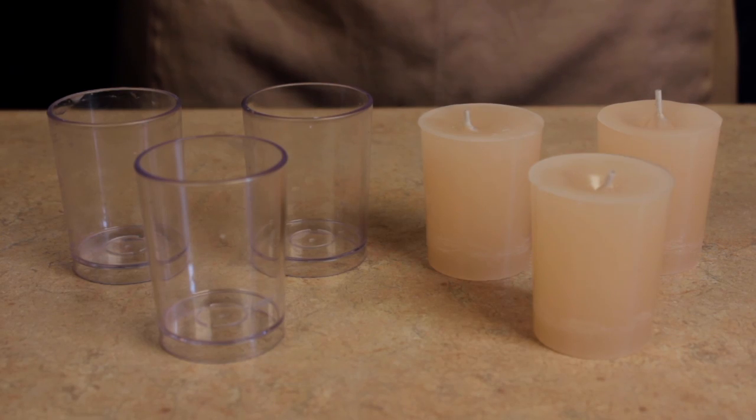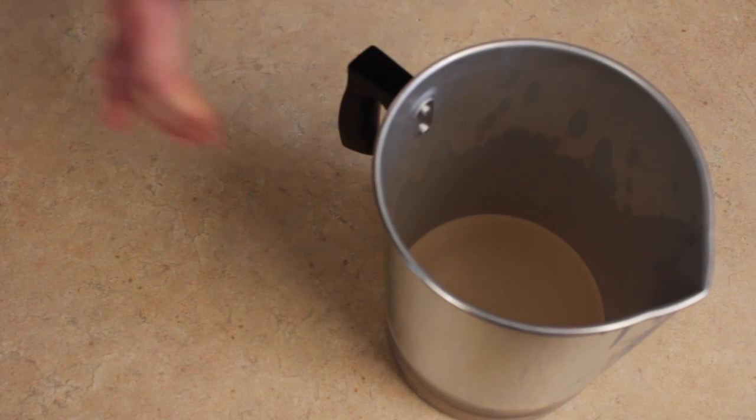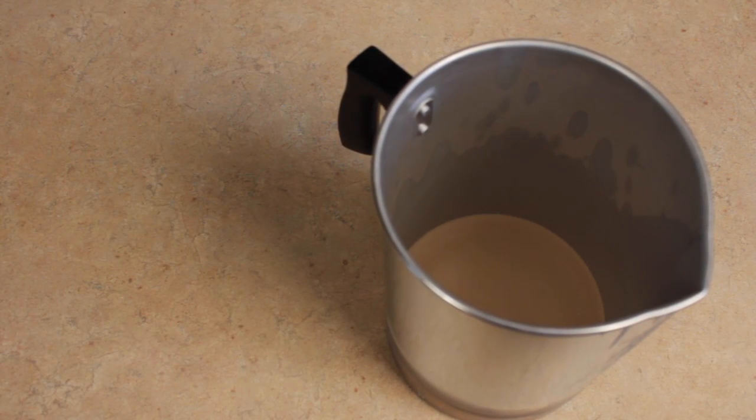Now you should once again have three empty molds and can repeat the entire process to make three more votive candles. Or you can simply set the wax aside right in the pouring pot so you'll have enough to make additional candles at a later date.